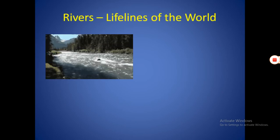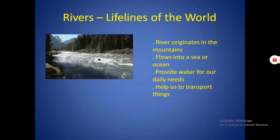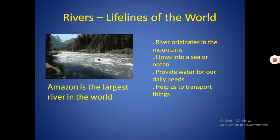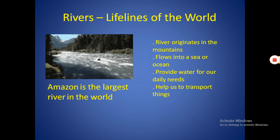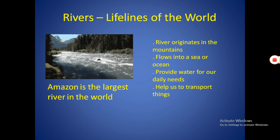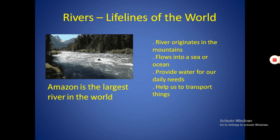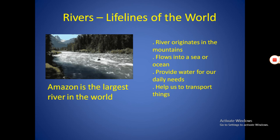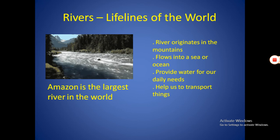Rivers. Rivers are very important — they are the lifelines of the world. Lifelines means the things we depend on for our life, like water. A river is a large flow of water across land. A river originates in the mountains, flows downwards, and joins a sea or ocean. The Amazon in South America is the largest river in the world.